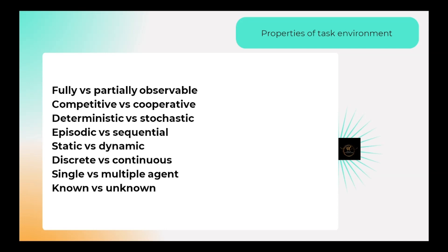The next property is competitive versus cooperative. In a chess game, one agent plays against another agent — this is competitive. In cooperative environments, multiple agents work together. For example, in a self-driving car scenario, vehicles on one road cooperate to reach their destinations more easily.